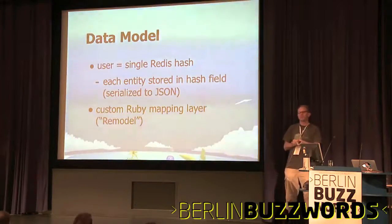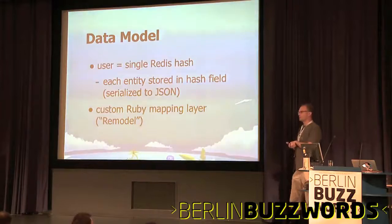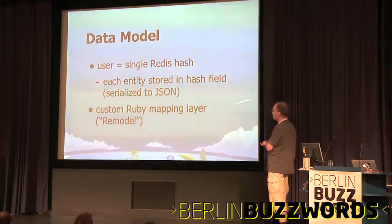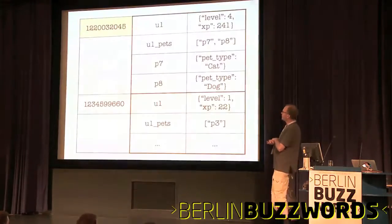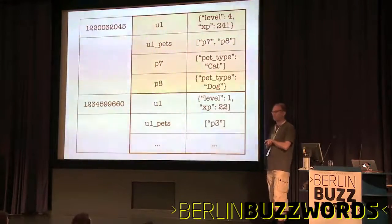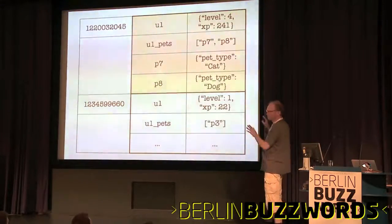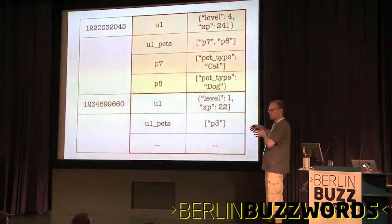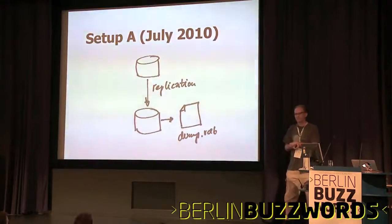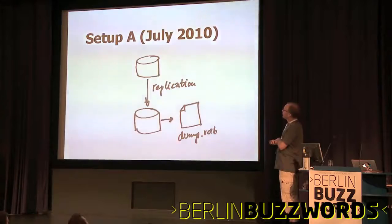For the data model we chose a very simple approach. Of the many data structures Redis offers, we only use a single structure: the hash. This hash contains all the data of a single player. We wrote a little mapping layer in Ruby to serialize the data into this hash. In Redis the key is just the Facebook ID, and the value is a hash with fields and values — all strings. It looks like JSON but it's JSON serialized into a string and stored in Redis. This data model developed somewhat by accident but proved very fortunate.